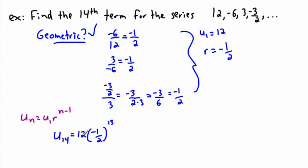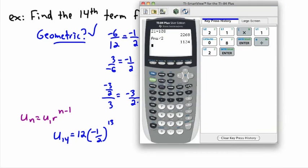You might say I do 12 times negative 1 half and take that answer to the power of 13, right? Wrong. You first do negative 1 half to the power of 13, and only then do you multiply your answer by 12. Now this could be done by hand, but I want to show you how to do this on your calculator.